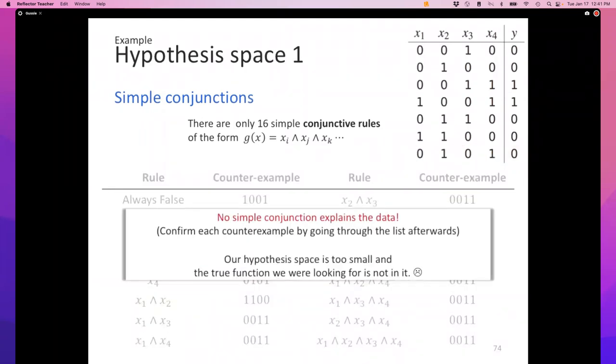The problem that we had was the first problem was the original set of functions was too large. It was 2 power 16. It had 2 power 16 elements. So we decided to make an assumption that maybe only one of these 16 functions is the right answer. Turns out that the hypothesis space that we chose, the set of functions that our learner here chose, is too small. And it's not possible that the true function could be in that hypothesis space.